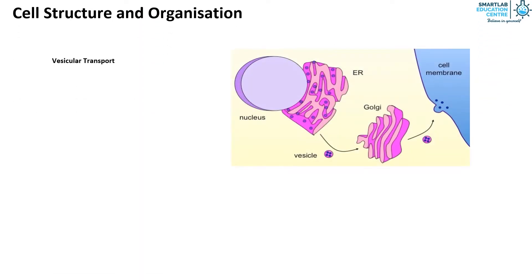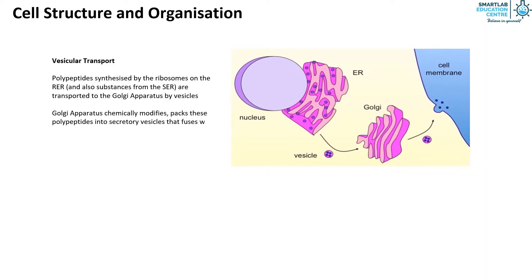We also have to know about vesicular transport. Polypeptides synthesized by the ribosomes on the RER and substances from the SER are transported to the Golgi apparatus by vesicles. The Golgi apparatus then chemically modifies and packs these polypeptides into secretory vesicles that fuse with the cell membrane to release its content outside the cell. So the flow is as such: from the RER to the Golgi apparatus and then finally to the cell surface membrane.